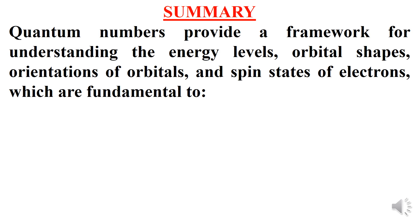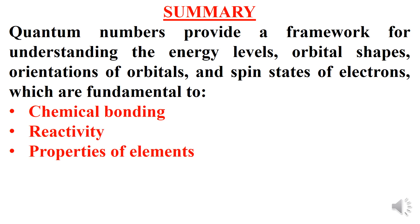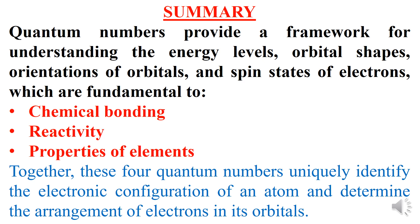To summarize, quantum numbers provide a framework for understanding the energy levels, orbital shapes, orientations of orbitals and spin states of electrons, which are fundamental to chemical bonding, reactivity and properties of elements. Together, these four quantum numbers uniquely identify the electronic configuration of an atom and determine the arrangement of electrons in its orbitals. Thank you so much for watching — I hope you enjoyed it and I will meet you in my next tutoring session.